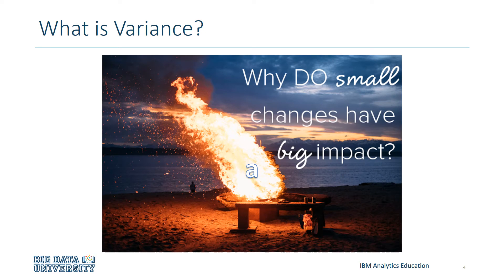Variance is the inconsistency of a model due to small changes in the dataset. In statistics and probability theory, variance is the expected value of the square deviation of a random variable from its mean. It can also be defined as a measure of the spread between numbers in a data set and their mean. If the model changes drastically due to minor modifications, it's considered to have high variance.